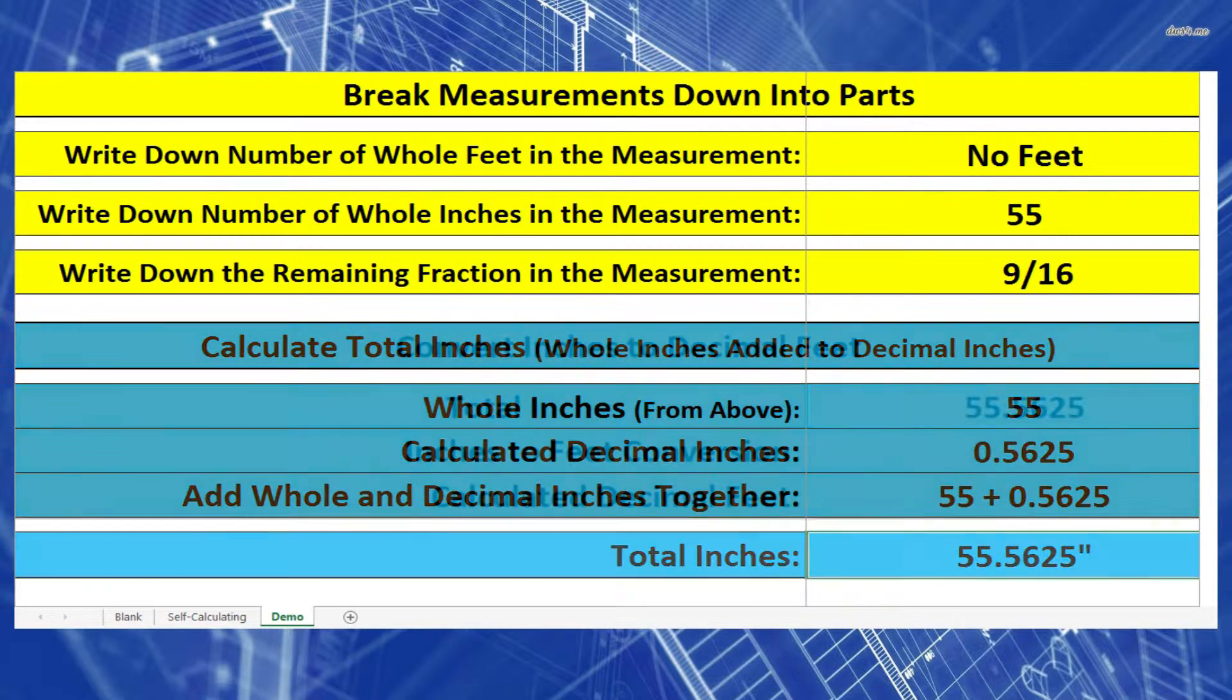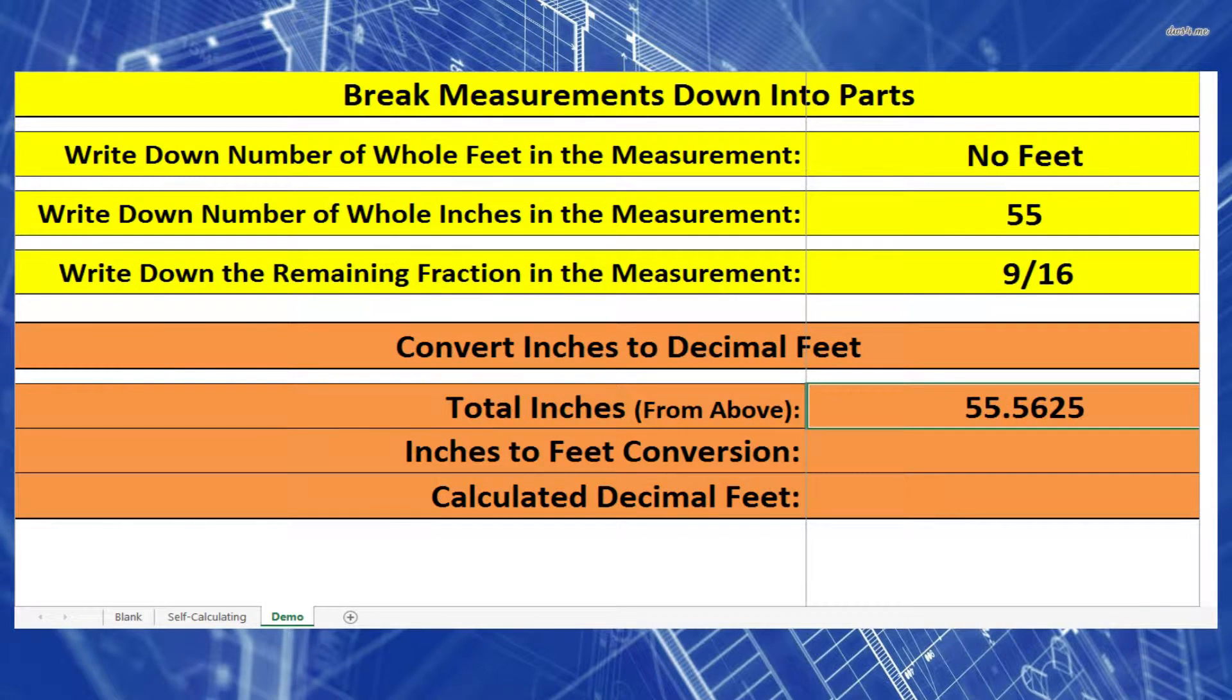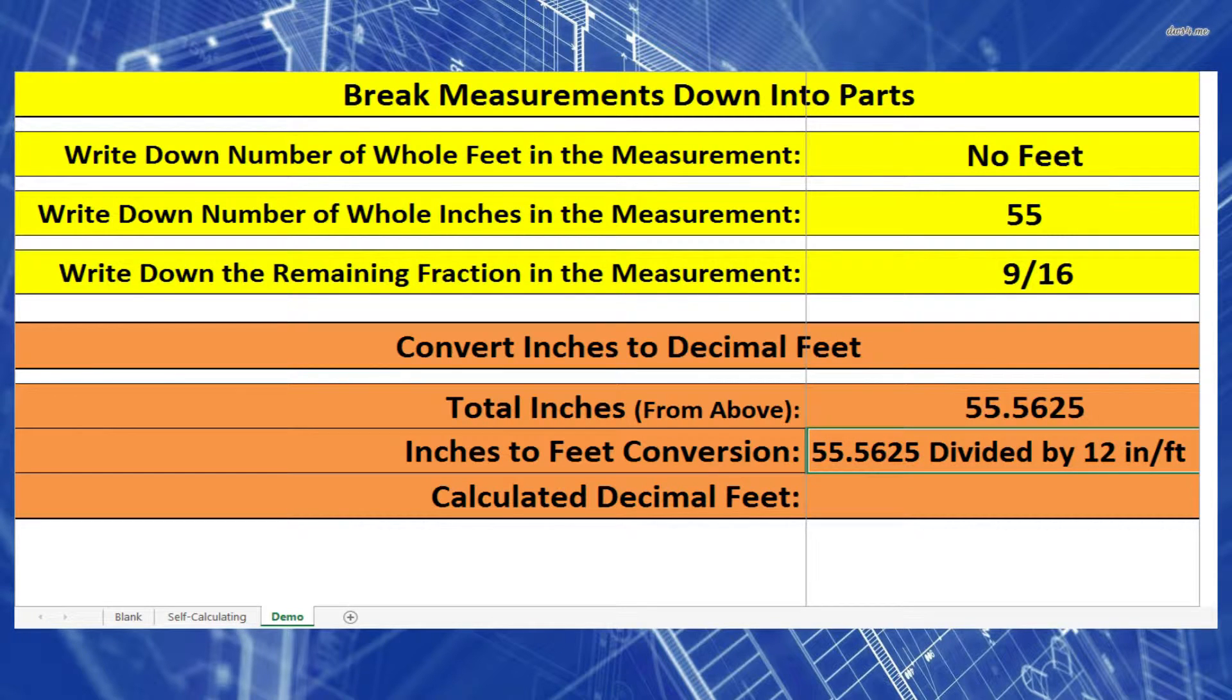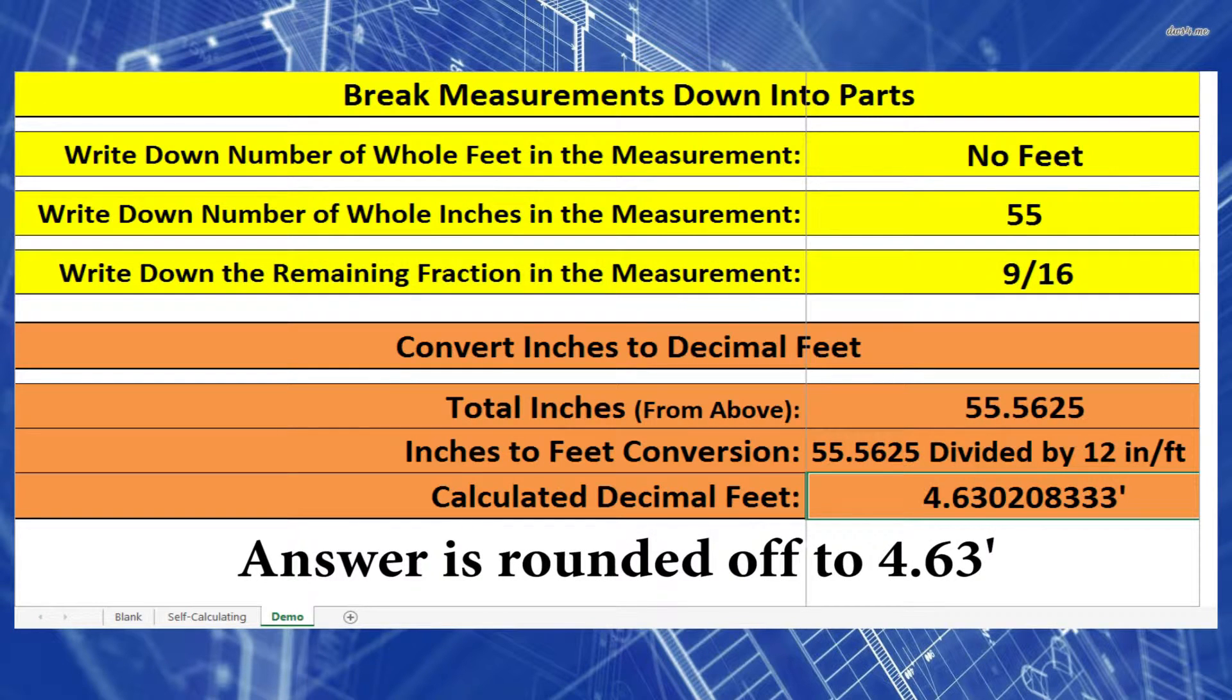Now our final step. Let's take that number and divide it by 12 inches per foot to bring it into feet and decimal feet. So 55.5625 inches divided by 12 inches per foot equals 4.63 feet.